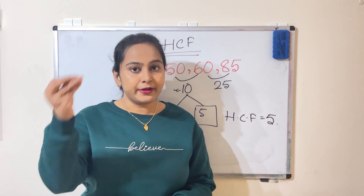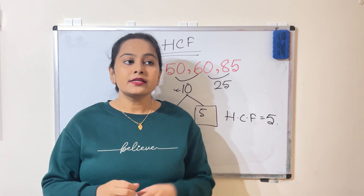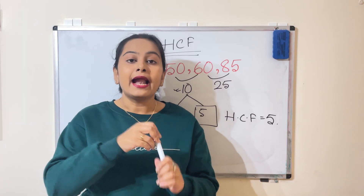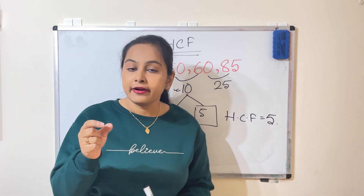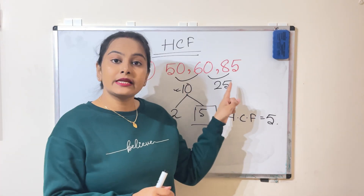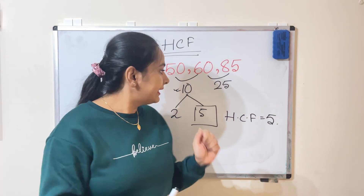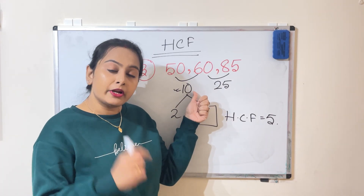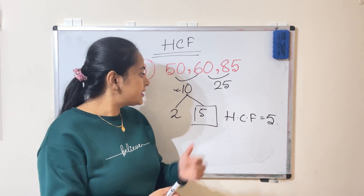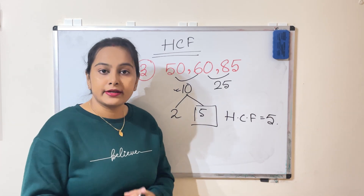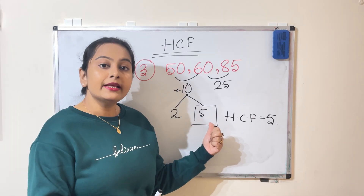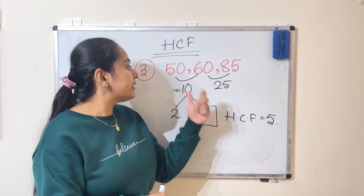So far we have discussed three different methods. First: just find the difference of two numbers and that is the answer. Second: for three numbers, find all differences and choose the smaller one, then check if it is a factor of all those numbers. Third: if the smaller difference is not a factor of all numbers, find the factors of that smaller difference and choose the greatest factor — for example, between 2 and 5, choose 5 as the HCF.